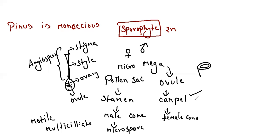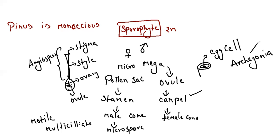The female gametophyte is formed after germination of the megaspore. The female gametophyte consists of two types of structures: archegonia, which forms the egg cell, and endosperm, which provides nutrition for embryo development. Archegonia terminology is seen in bryophytes, pteridophytes, and gymnosperms. The nucellus provides nutrition to the archegonia. Unlike angiosperms which have a seven-celled, eight-nucleate embryo sac, gymnosperms have only these two structures.